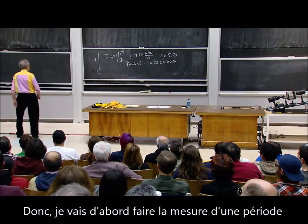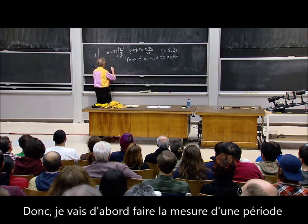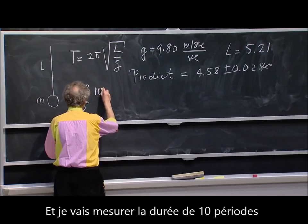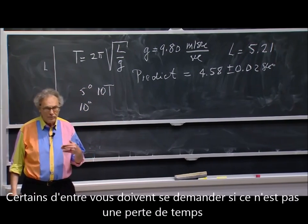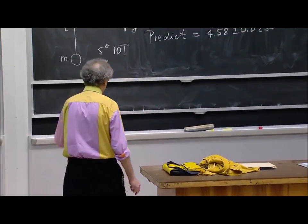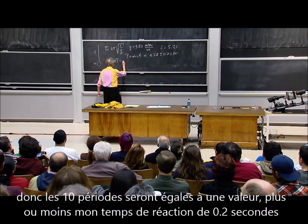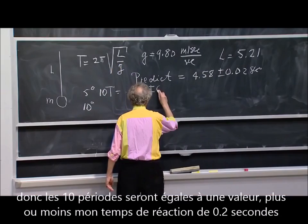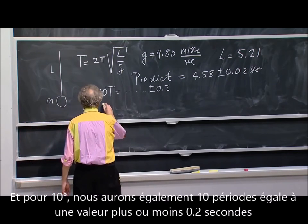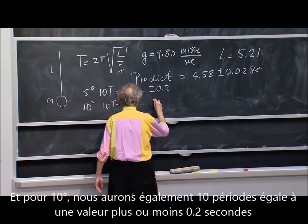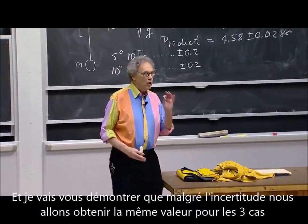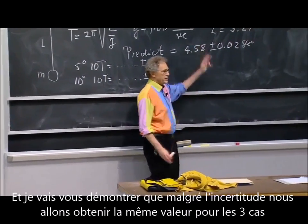I'm going to first make a period measurement at five degrees and then at ten degrees amplitude. I'm going to measure ten periods, not one. Ten T will be some number plus or minus 0.2 seconds — my reaction time. Then at ten degrees we get again ten T, another number, again plus or minus 0.2 seconds. I'm going to demonstrate that within the uncertainty of the measurements, I get the same numbers in all cases.